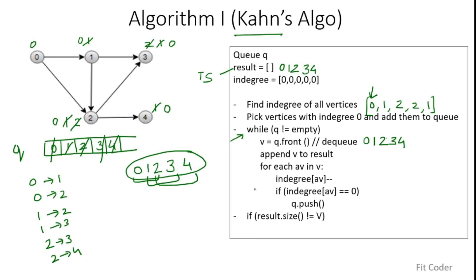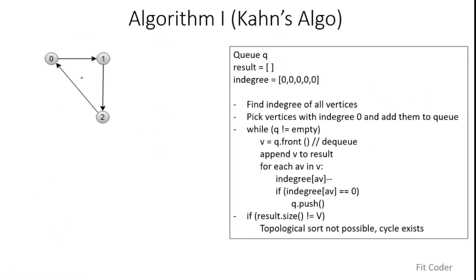Kahn's algorithm can also detect whether topological sort is possible for a given graph. If the result array size is not equal to the number of vertices, then topological sort is not possible — the graph contains a cycle. For example, given a cyclic graph where every vertex has indegree 1, no vertex has indegree 0, so nothing is added to the queue. The queue remains empty, the result is empty, and since result size is not equal to v, we conclude that topological sort is not possible.